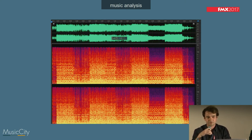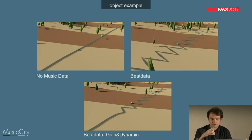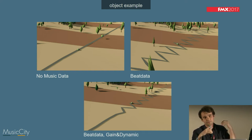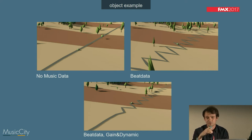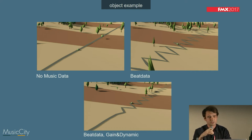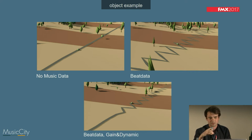We also have the beats. We started always with one object — like the street here — and the street is totally adapted to the music. You see what the straight street looks like without beats. Then we added the beat data, so the car is always moving left and right when the beat appears. Then we added the gain and dynamic to it — so, for example, if there's nothing happening in the music, there should also not be any curves.